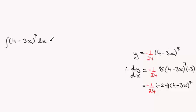So the answer to this is going to be that it equals -1/24 of (4 - 3x)^8 plus a constant of integration. So that's essentially how I would go about that, how I'd see that as the reverse of the chain rule.